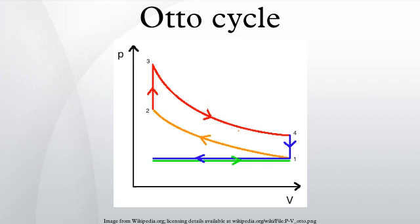Process 3 to 4 is an adiabatic expansion. Process 4 to 1 completes the cycle by a constant volume process in which heat is rejected from the air while the piston is at bottom dead center. Process 1 to 0: the mass of air is released to the atmosphere in a constant pressure process. The Otto cycle thus consists of isentropic compression, heat addition at constant volume, isentropic expansion, and rejection of heat at constant volume.